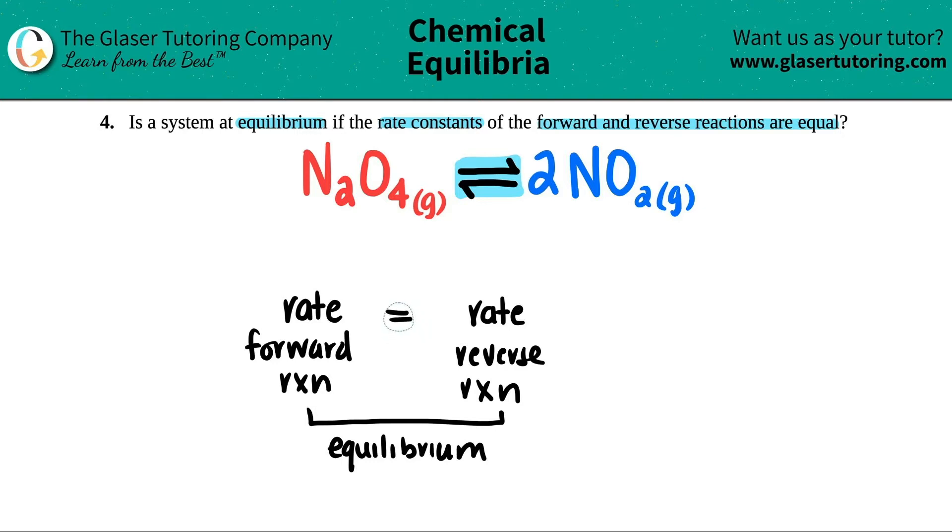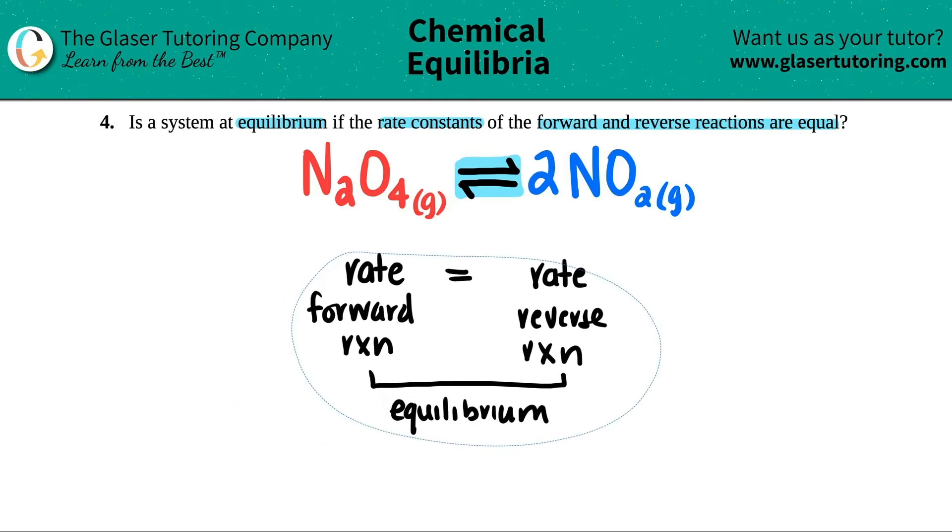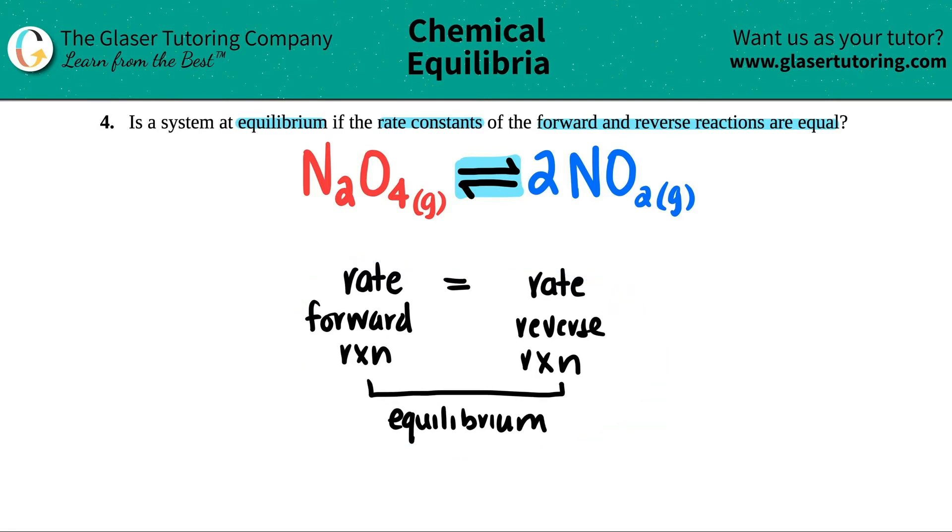Now, to answer the question: is the system at equilibrium if the rate constants of the forward and reverse reactions are equal? Well, we know that the rate has to be equal.